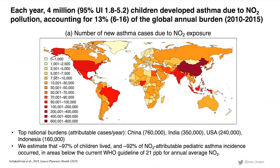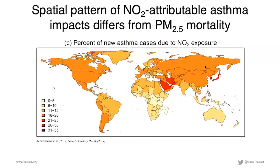At a high level, we found that every year about 4 million children develop asthma due to NO2 pollution, accounting for about 13 percent of the global annual burden. The top national burdens in attributable cases per year were in China, India, the US, and Indonesia, but cases are relatively distributed throughout the world. A major finding was that about 92 percent of NO2-attributable pediatric asthma incidence occurred in areas where NO2 concentrations were already below the current WHO guideline of 21 parts per billion for annual average NO2, suggesting the guideline may need to be revisited.